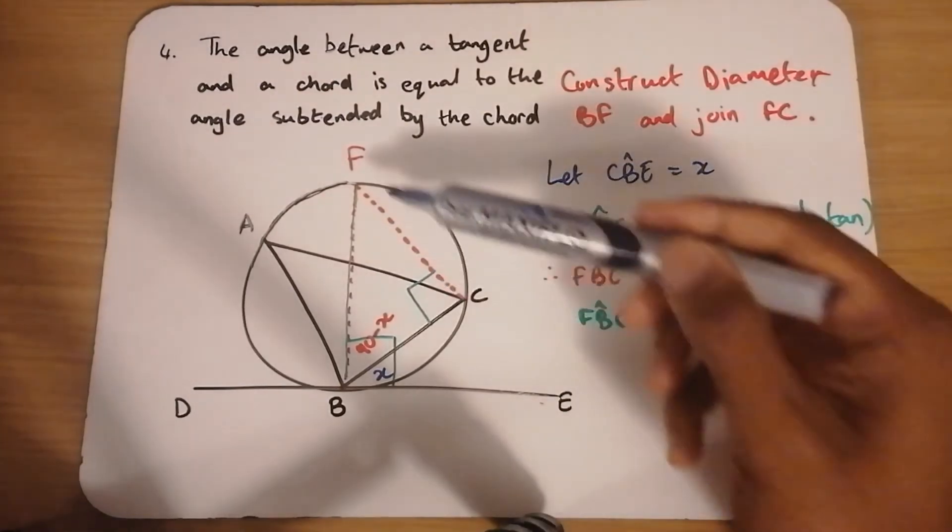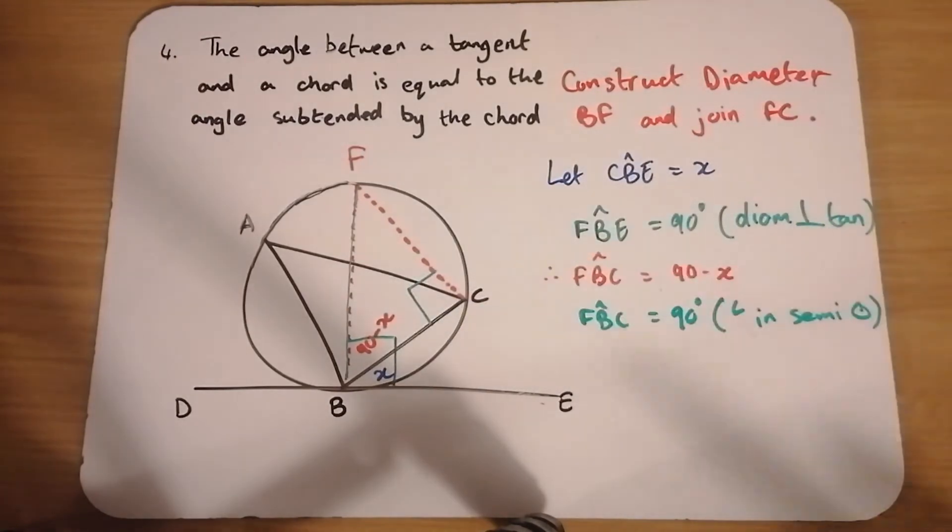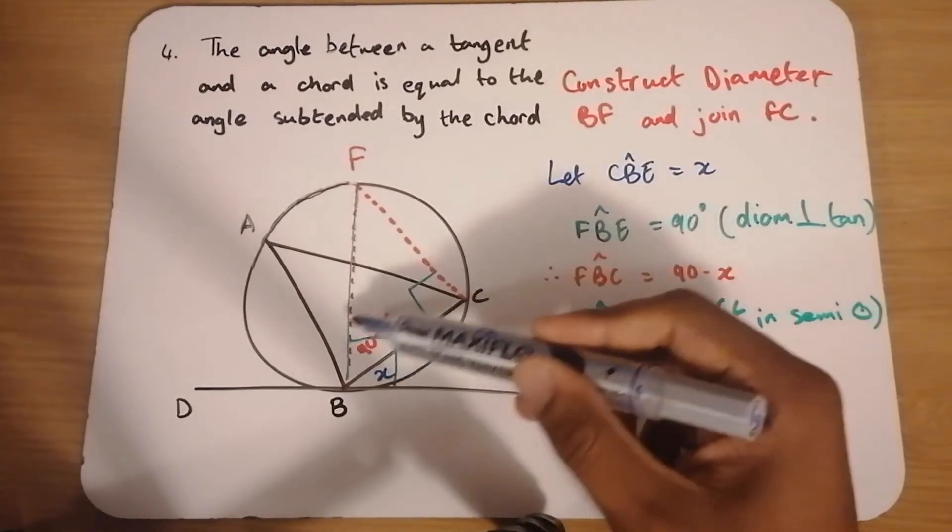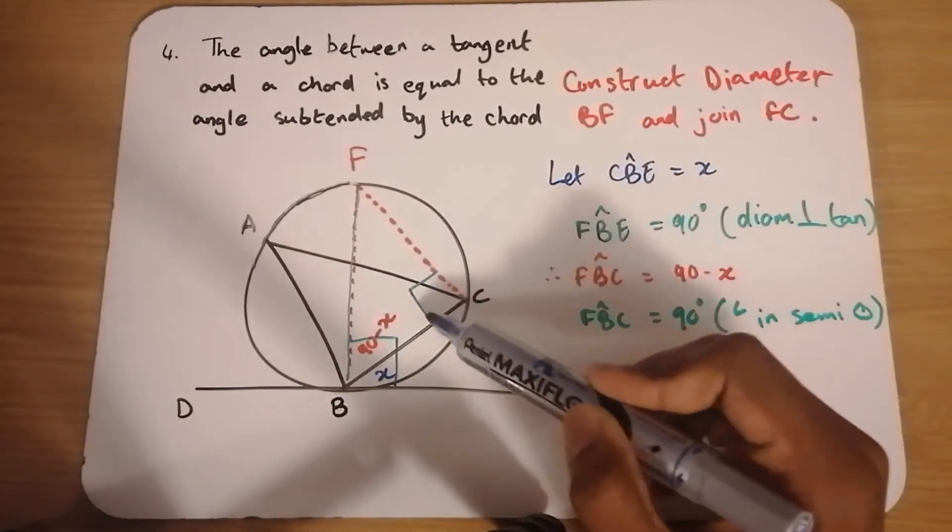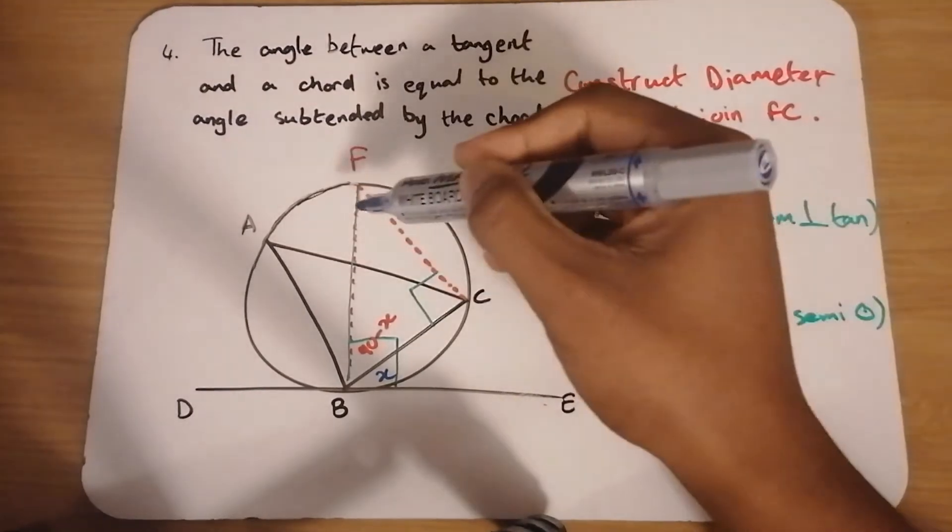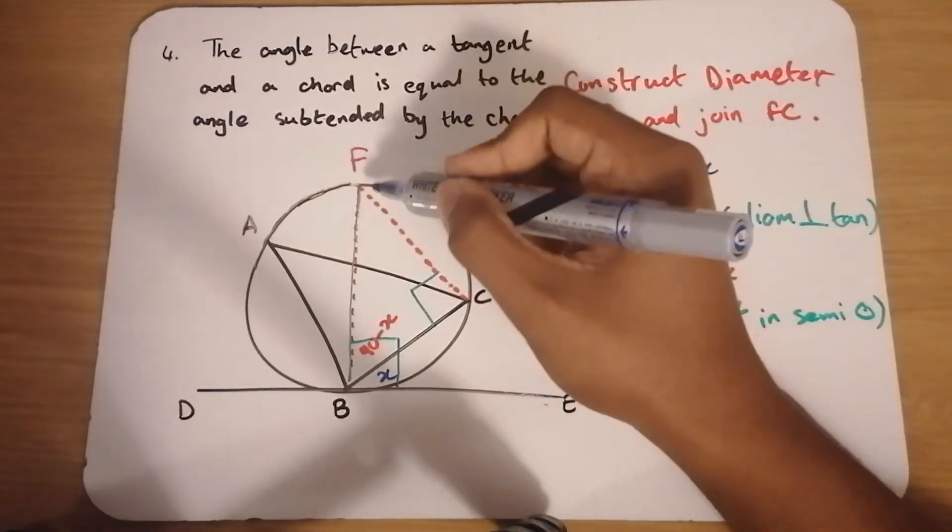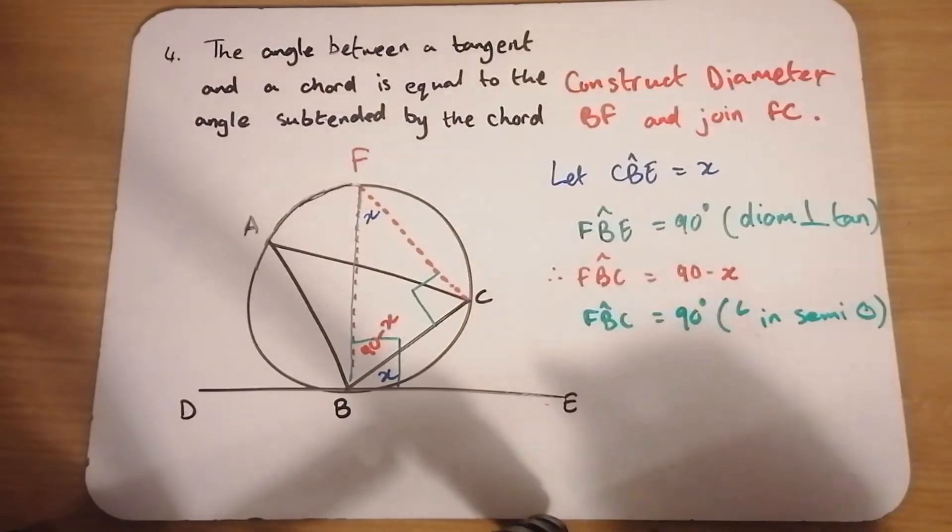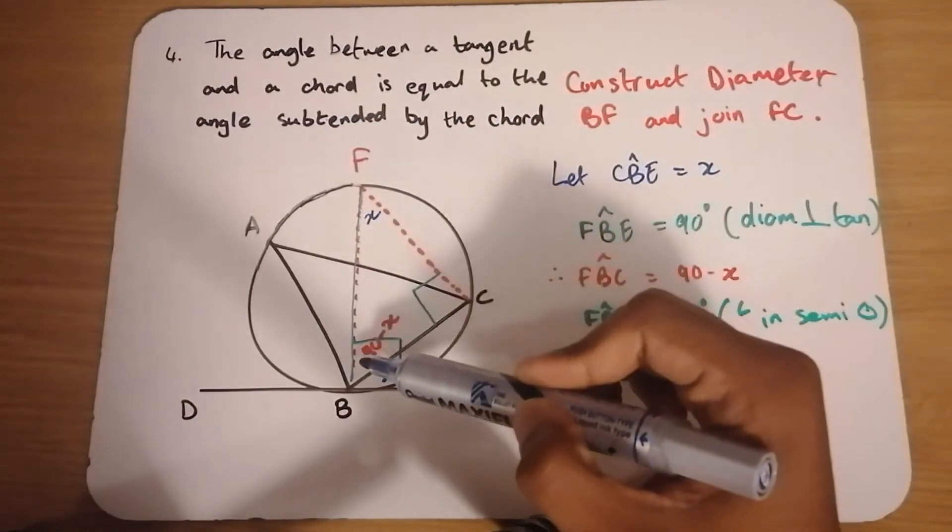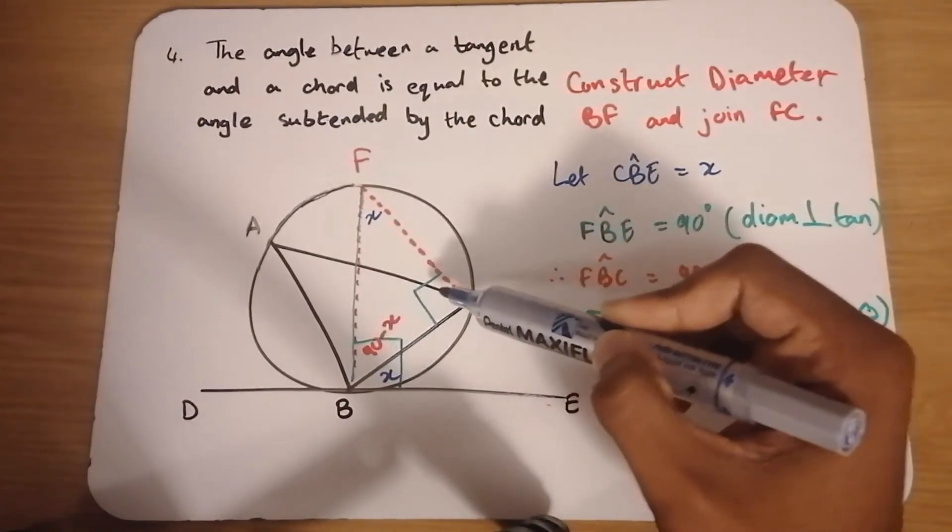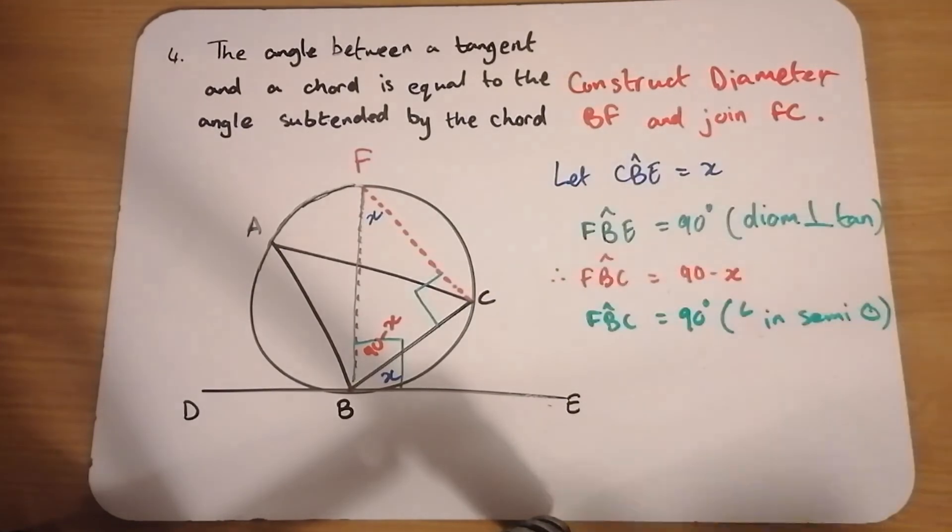Now, look at this triangle FBC. This angle is 90 minus X. This one is 90. The third angle of the triangle will definitely be X. Because X plus 90 minus X plus 90 all add up to 180.